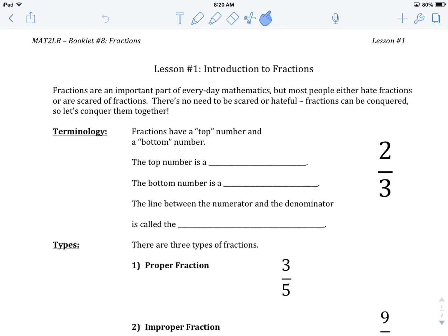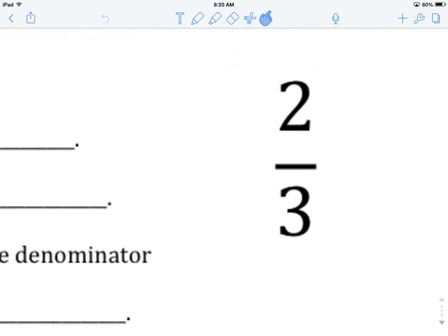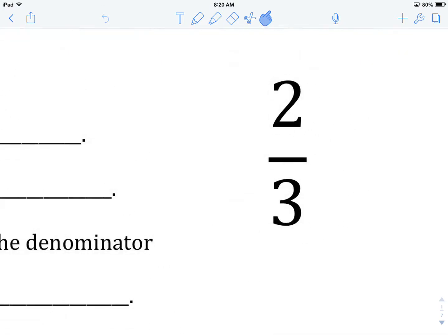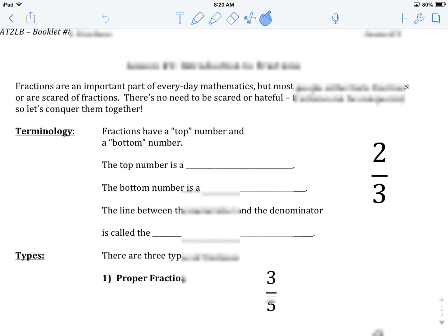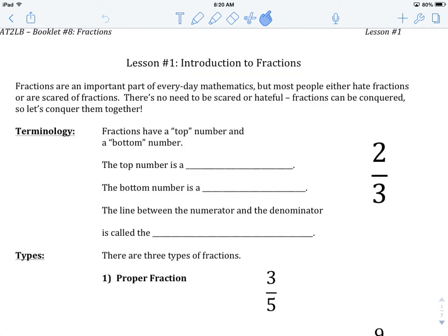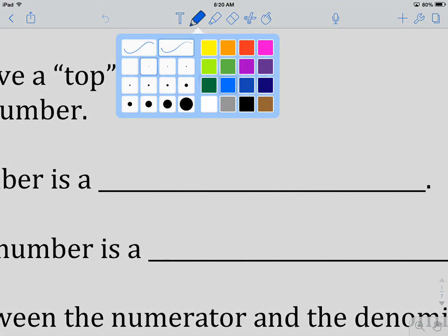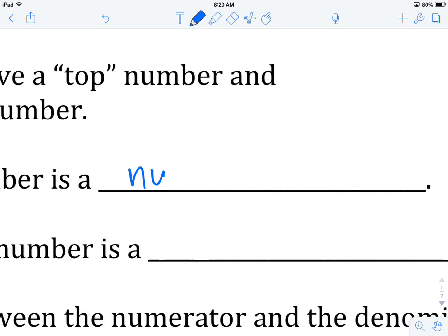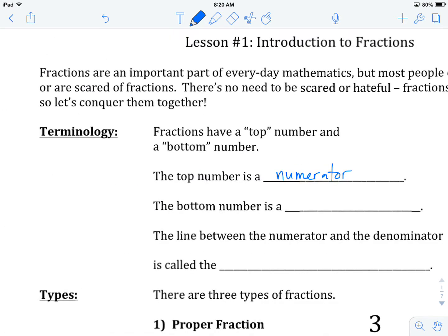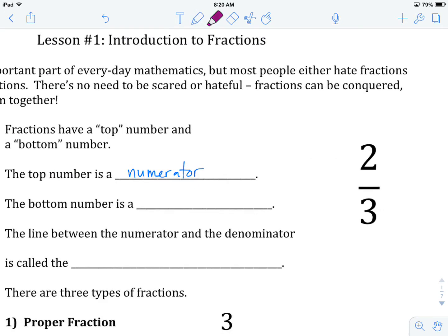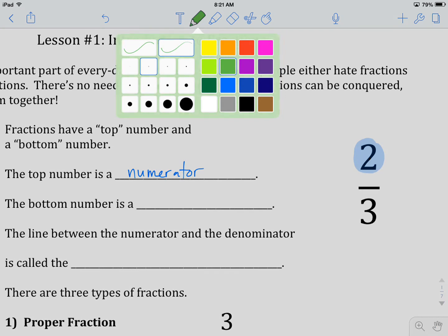When we look at fractions, as we can see over here with this big number and a line and a number underneath, fractions have a top and a bottom. The top number, we have a particular name for it. The name for the top number is numerator. The numerator sits right on top of the line and the other number underneath. The bottom number is called the denominator.